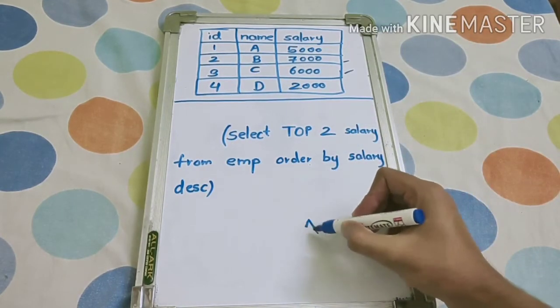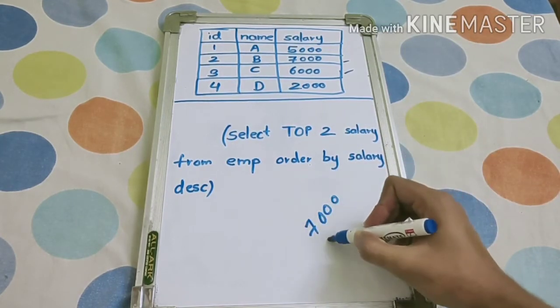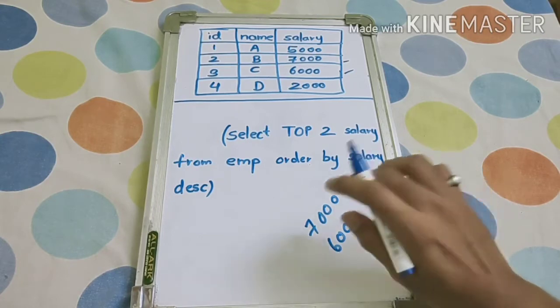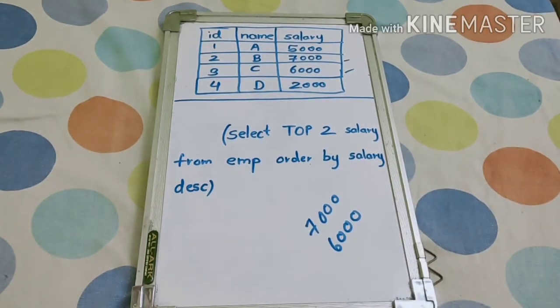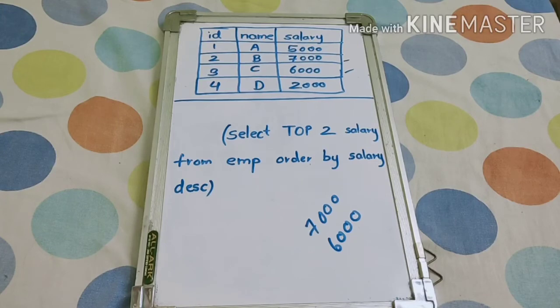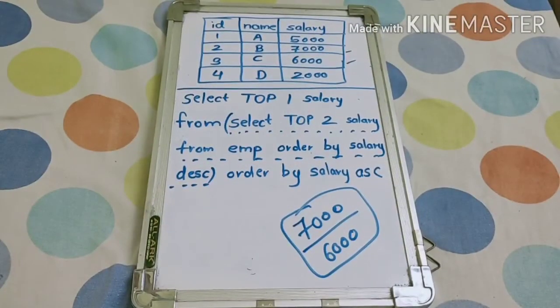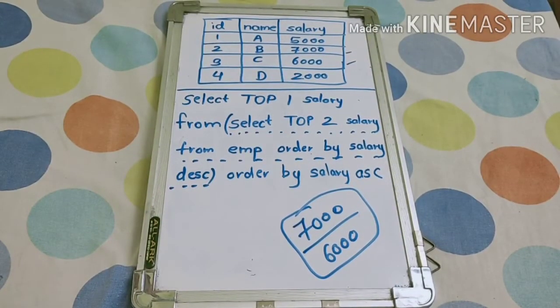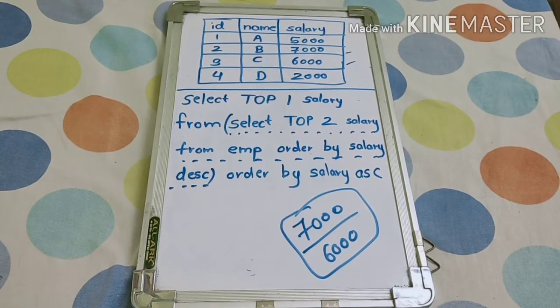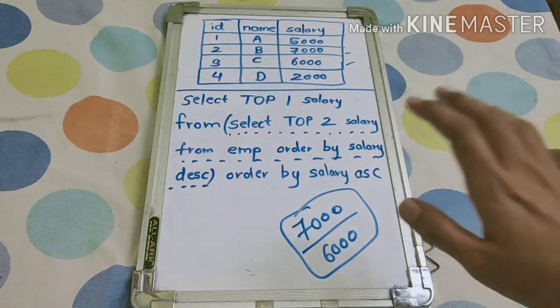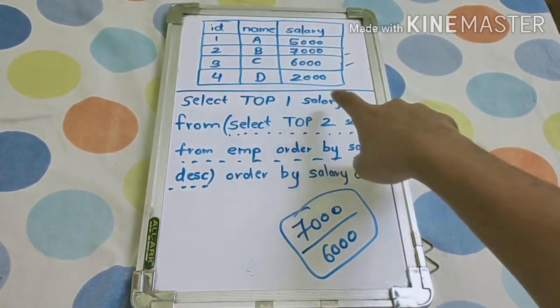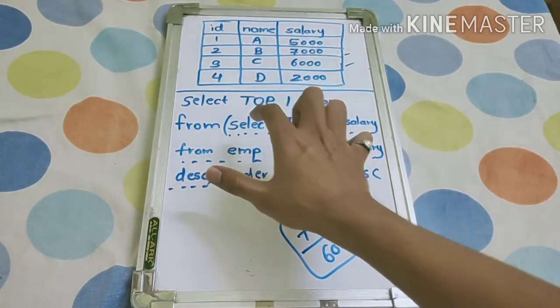So we have now seven and six, these are the top two salaries. Now we have to find second highest, means obviously the output will be 6000. So we will write outer query for that. From inner query as we got this 7000 and 6000 highest salary from this table, if you have to find second highest as per the question, just write this outer query: select top one salary from this output.